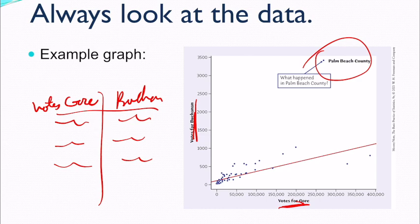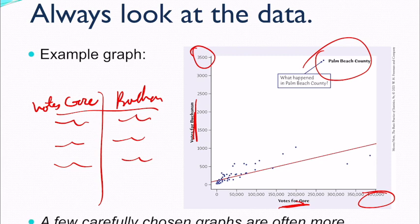Like why did so many more people vote for Buchanan than Gore? Why is there such a difference? Also pay attention to the scale. I don't love that the scale is so different. So friendly reminder that a few carefully chosen graphs are often more instructive than great piles of numbers. We're going to be covering that more in chapter one.